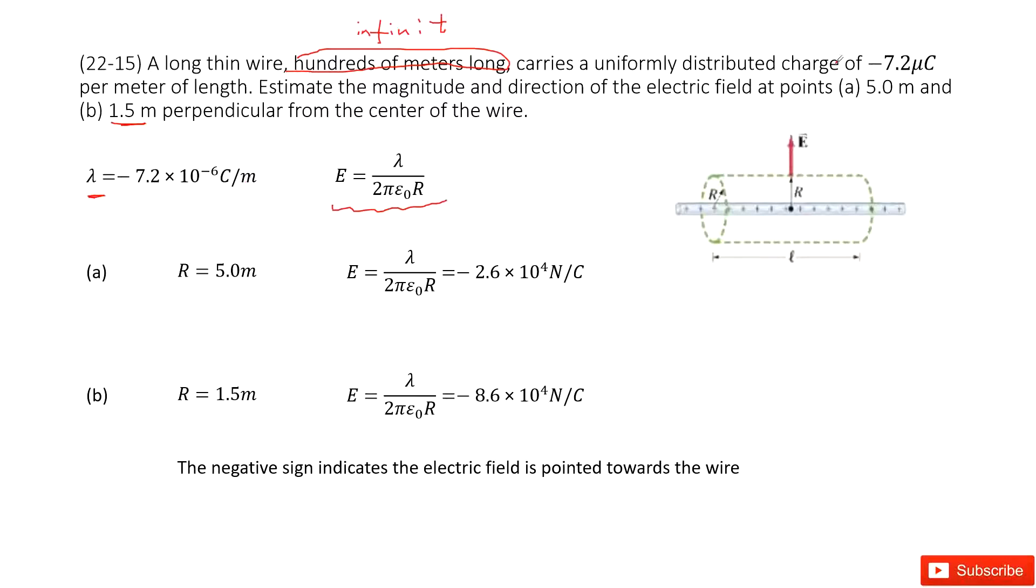Now we can see the first one tells us the R is just five meters. So we write R there. Now you can see in this function, lambda is given, R is given. So you input these two values inside, you get the answer there.